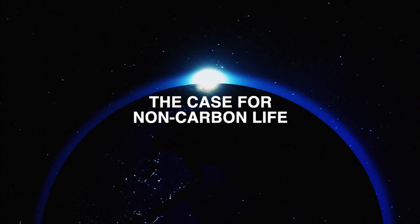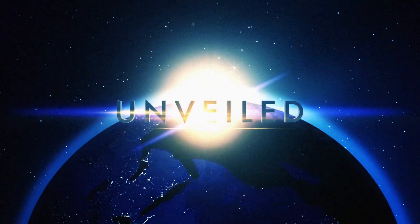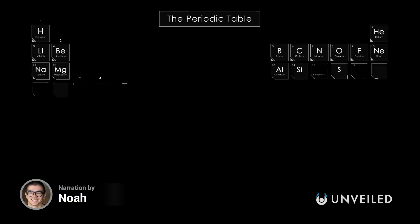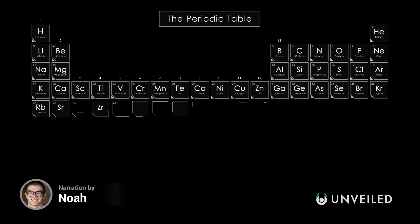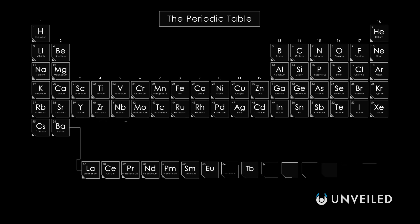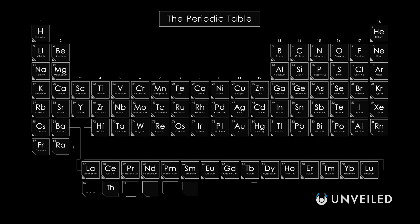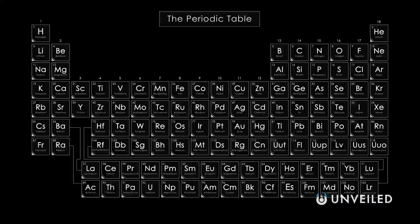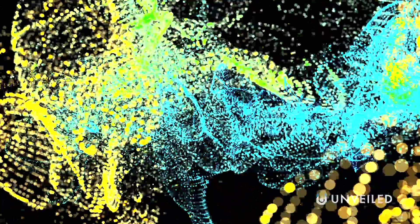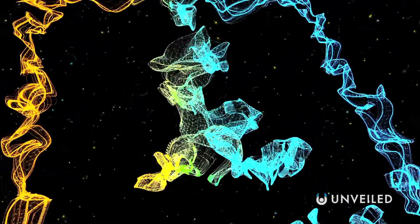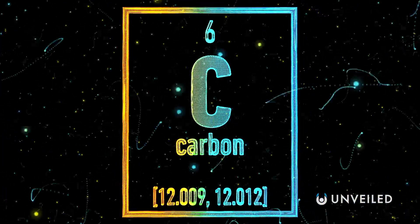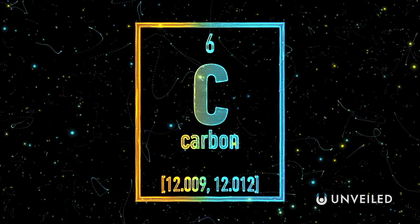The periodic table currently has 118 known elements, with more possible ones to be discovered. Yet out of all these possible elements, astrobiologists still consider carbon necessary for life and look for signs of it when searching for extraterrestrial lifeforms. Despite our carbon fixation, however, there are alternative elements that could feasibly support life. This is Unveiled, and today we're asking the question: is there a case for non-carbon life?